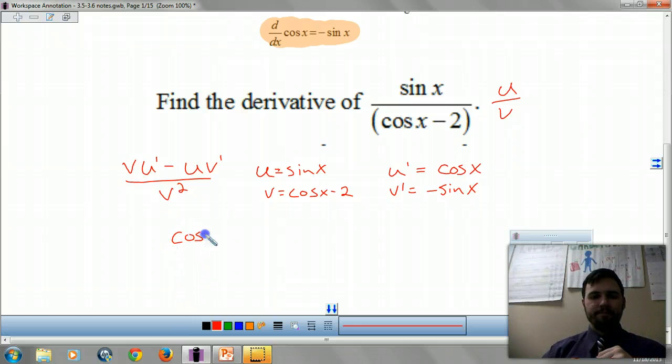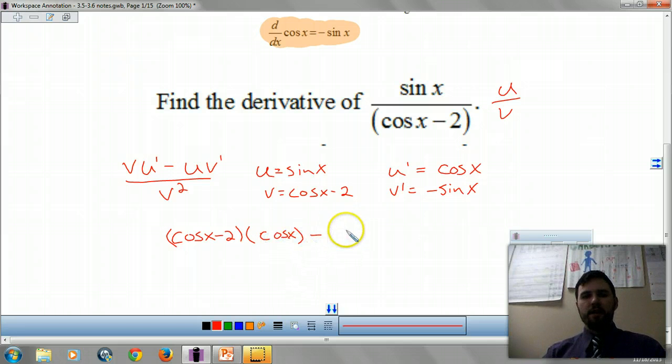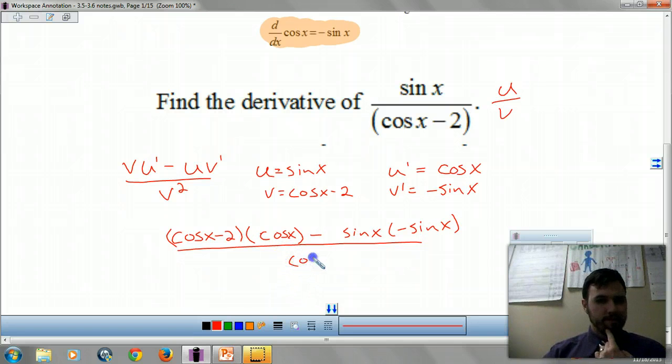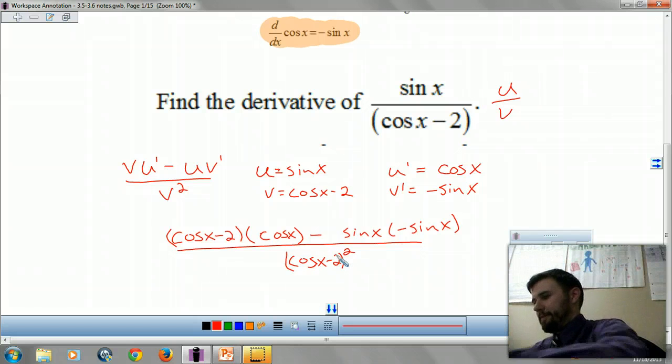So now we take our bottom times the derivative of the top minus our top times the derivative of the bottom, all over the bottom squared. That's so weird. Someone has a cell phone. I think it's me. I do.